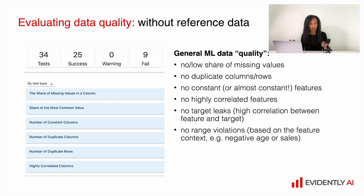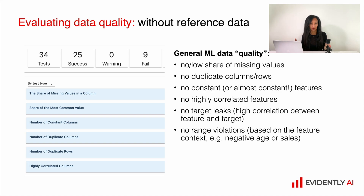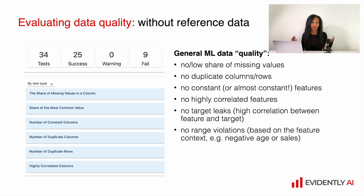If you do not have any reference data to compare with, you can still come up with some rules manually or based on the data type. For example, you can say that you do not want to have any missing values, and if there are some, please raise an alert. You do not need reference data because you can just manually decide on the threshold, like 1% of missing data and not more. Same goes for duplicated columns or rows, or constant or almost constant features, some thresholds for correlation between features. You might also check for target leaks and alert on high correlation between your numerical target and numerical or categorical features.